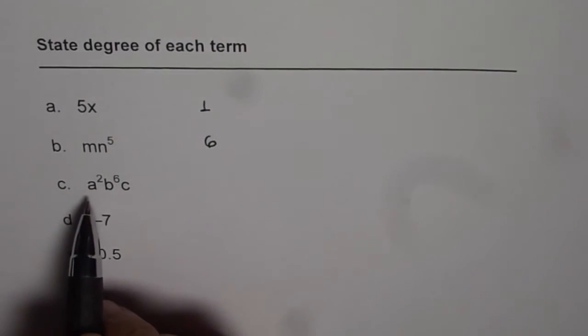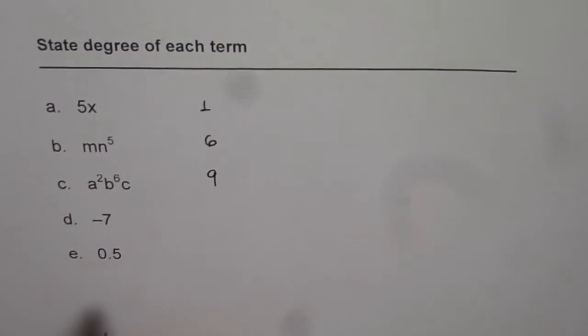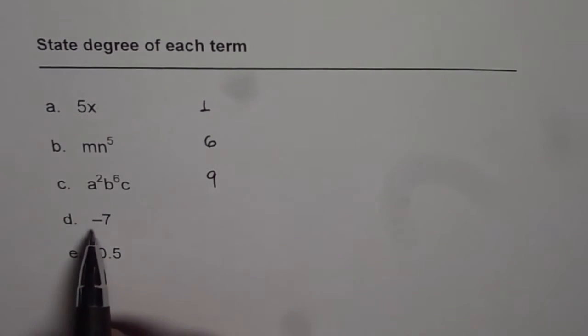In part c, the degree will be 2 plus 6 plus 1, that is 9. Now, what is the degree for minus 7?